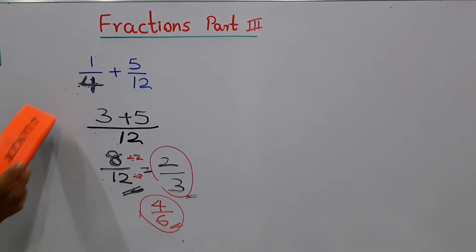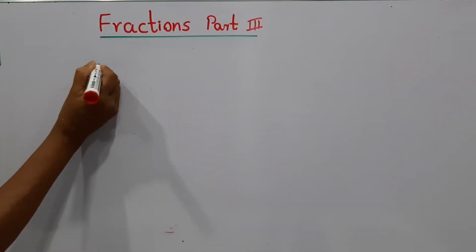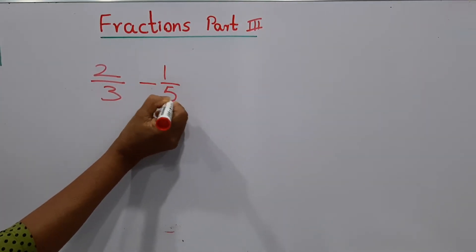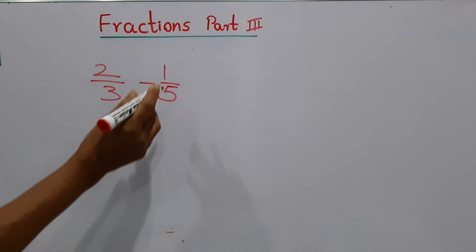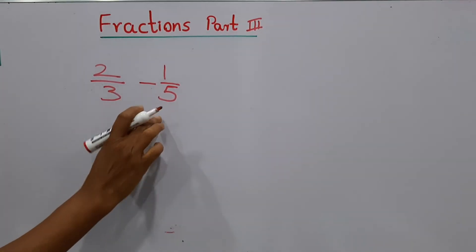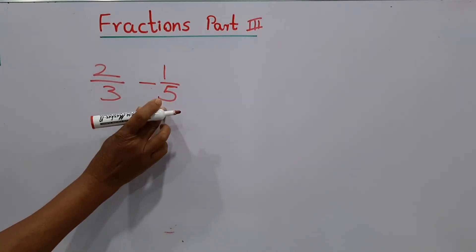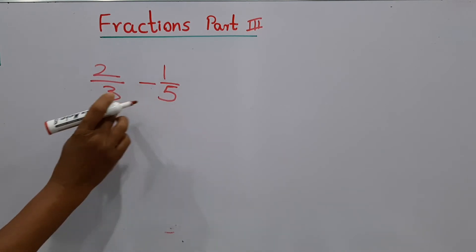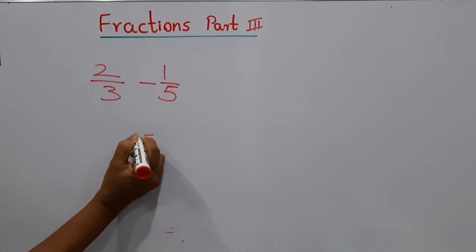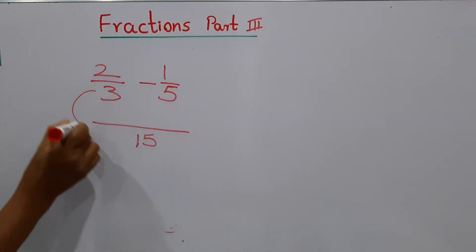Now we'll do another sum — a subtraction. You have to take away one fraction from another. Like before, check the denominators. The two denominators are not the same. We check the biggest denominator: are there threes in five? No. So we multiply them together: 3 times 5 equals 15. That is the common denominator.